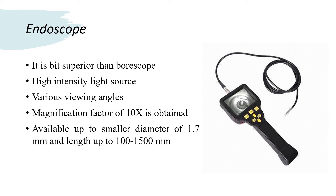In short, the endoscope is superior to the boroscope because of its optical system, high-intensity light source, and various viewing angles. The magnification factor of the endoscope is 10x, with a diameter as small as 1.7 mm and length from 100 mm to 1500 mm. This is another tool used to find out defects during visual inspection.